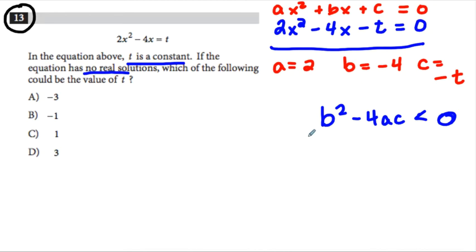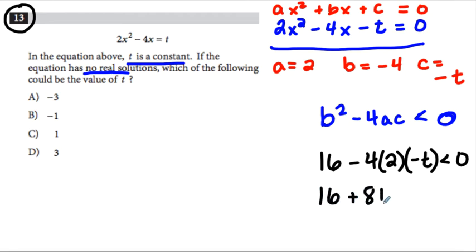All right, so I'm going to plug those right in. So b squared is going to give me 16 minus 4 times 2 times negative t. And I want that to be less than zero. I'm going to simplify. So that's 16 plus 8t is less than zero. So 8t is less than negative 16. And so t has to be less than negative 2.